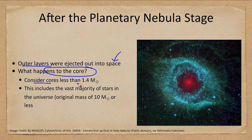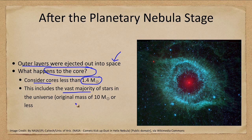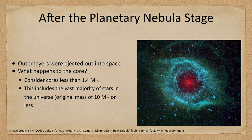First of all, let's consider cores less than a certain mass — specifically, a core less than 1.4 times the mass of our Sun. Why such a limit? This actually includes the vast majority of stars in the universe. If a star's original mass was 10 solar masses or less, it ends up with a core of about 1.4 solar masses or less. So we're looking at the vast majority of stars; we'll look at more massive stars later on.